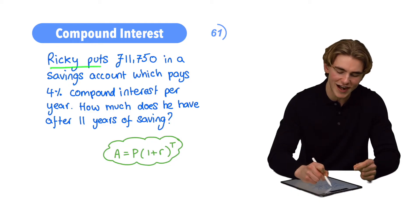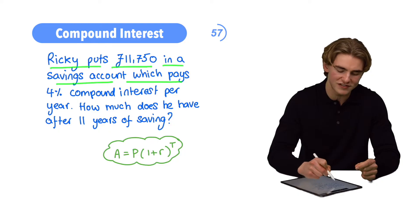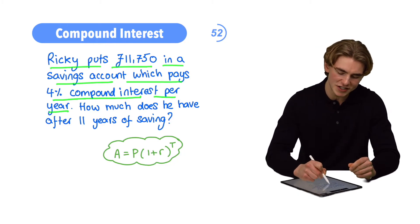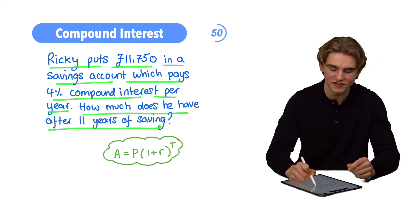The question says that Ricky puts £11,750 in a savings account which pays 4% compound interest per year. Then the question asks us how much he has after 11 years of saving.